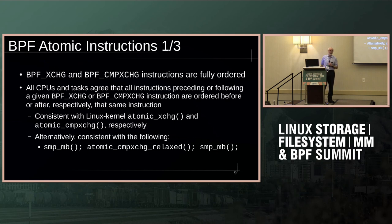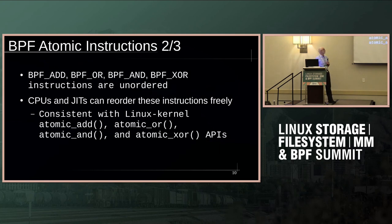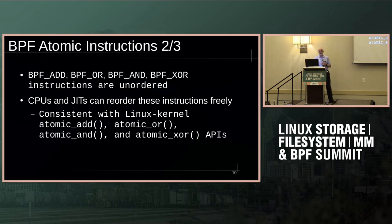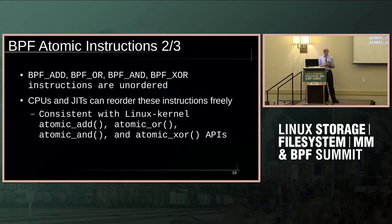You can make full ordering happen by putting memory barriers before and after, but that may over-synchronize in the failure case. BPF atomic with add, or, and, and XOR — if you have just those, that's unordered, similar to atomic_add, atomic_or, and so on in the Linux kernel. Those are also unordered. That means if you see one of those in code, you're free to move stuff back and forth across it, subject to whatever other constraints might be there.